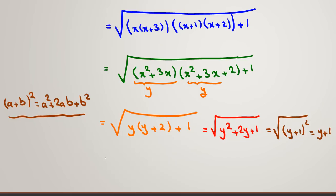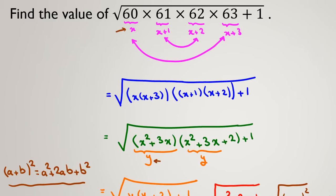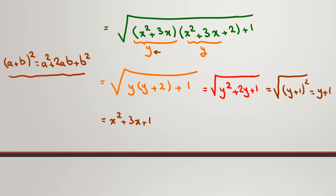So if I want to find the answer, what is it exactly? y was x squared plus 3x. So it will be x squared plus 3x plus 1. Because y is this by definition here. And x was what we said, x is 60. So if I replace x 60 here, it will be 60 squared plus 3 times 60 plus 1.